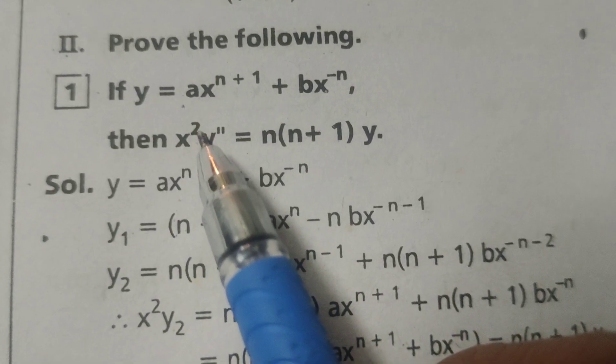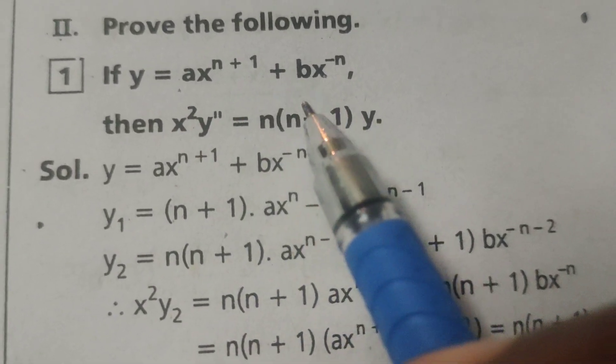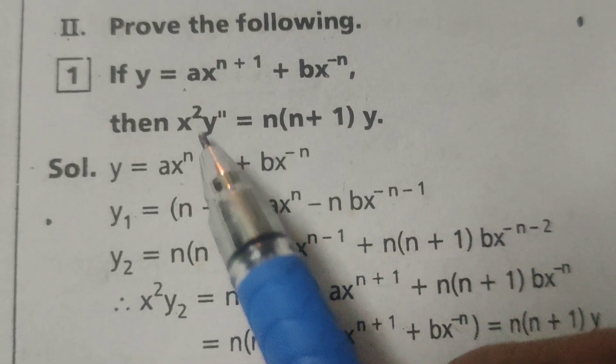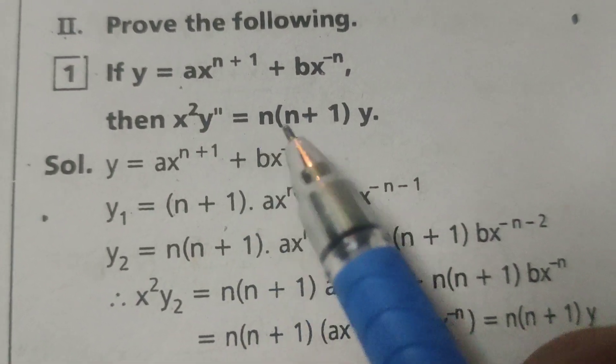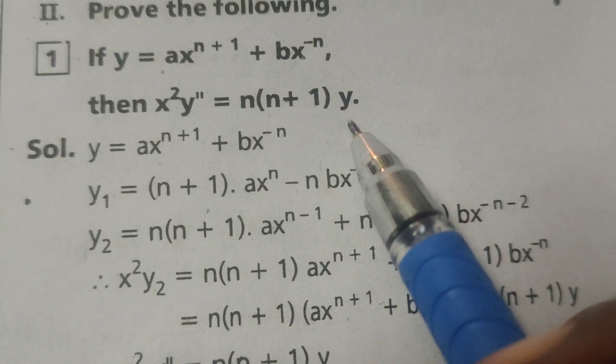If y equals ax power n plus 1 plus bx power minus n, then x square y double dash equals n into n plus 1 into y.